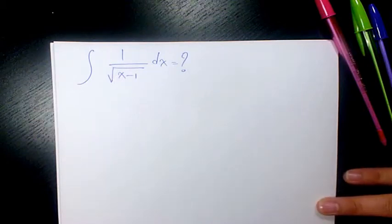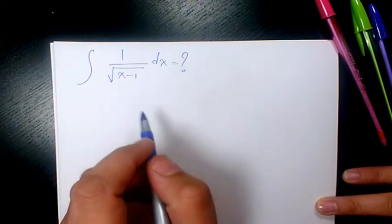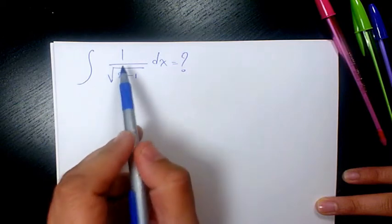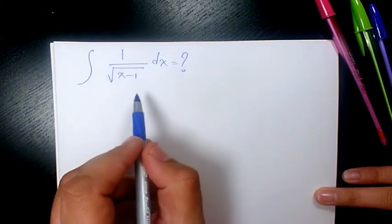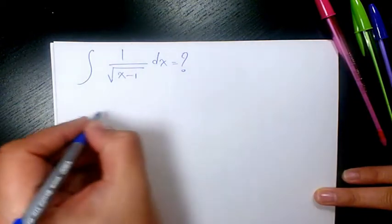What's up guys, this is Masi. Welcome to another video. In this video I want to show you how to find the integral of 1 over square root of x minus 1, dx. I'm going to consider u as x minus 1 and du as dx.